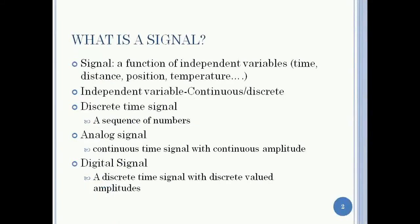What is a signal? A signal is a function of some independent variable such as time, distance, temperature, etc. An independent variable can be continuous in nature or discrete in nature.